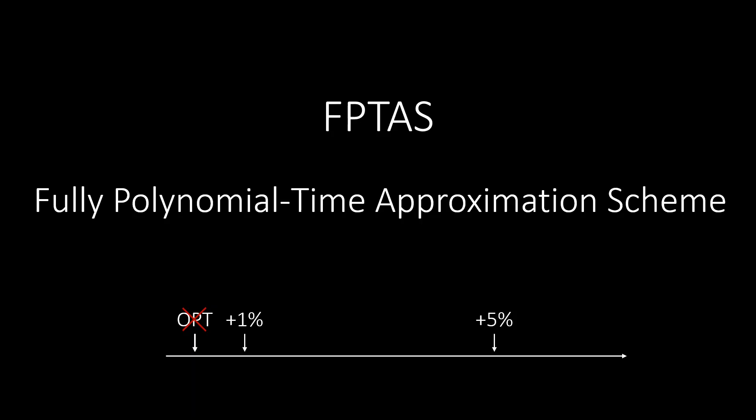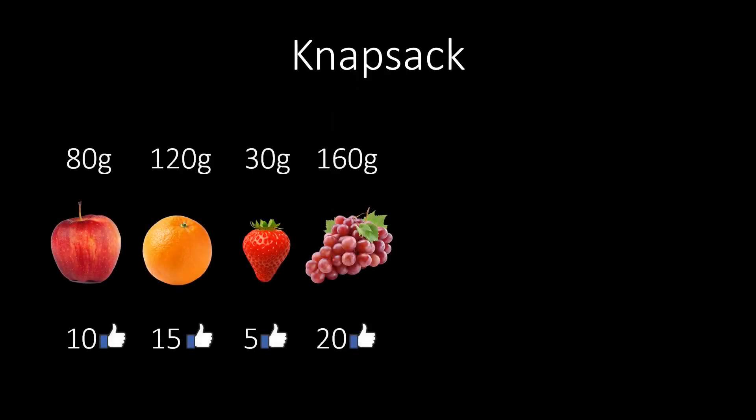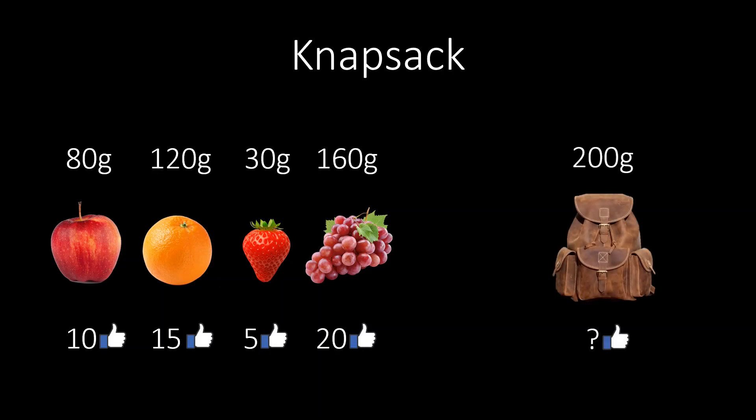Let's consider the knapsack problem to illustrate how an FPTAS works. In the knapsack problem, we are given a set of items. We will use fruits as an example. Each item has a weight and a value. We want to pack items with as much value as possible into our knapsack. But of course, we can't carry everything. Our knapsack has a weight limit.